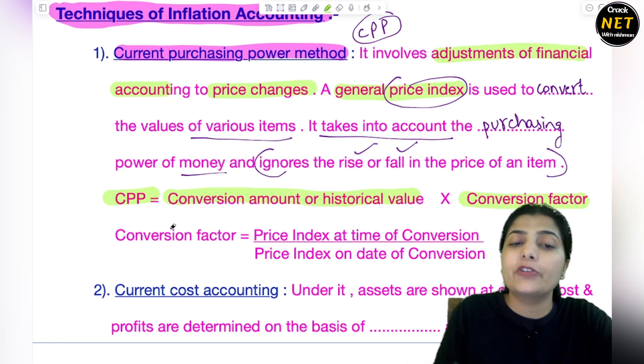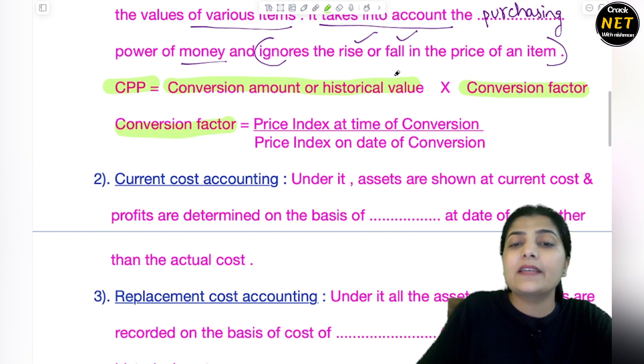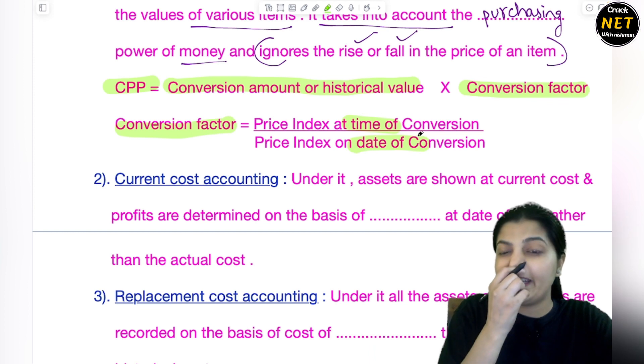Now you will ask me what is Conversion Factor? Conversion Factor is Price Index at the time of conversion divided by Price Index on the date of conversion. The time when you did it and the last date.